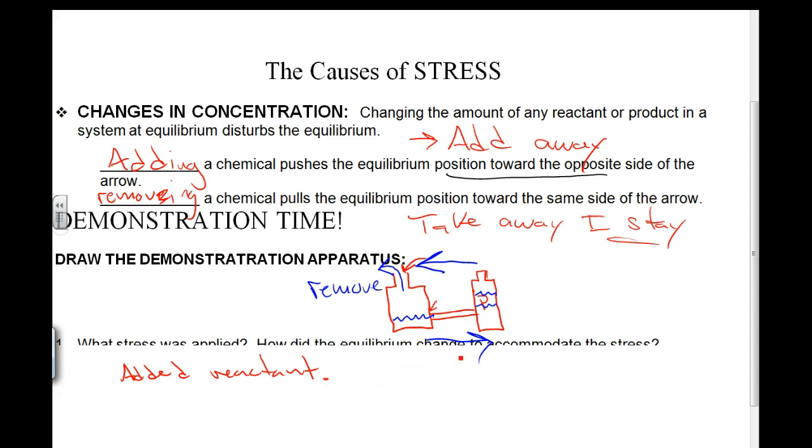How did the equilibrium change to accommodate the stress? Think back. When I added reactant, that was in here, I added it. It flowed towards the product. So, how did the equilibrium change? More products were formed.